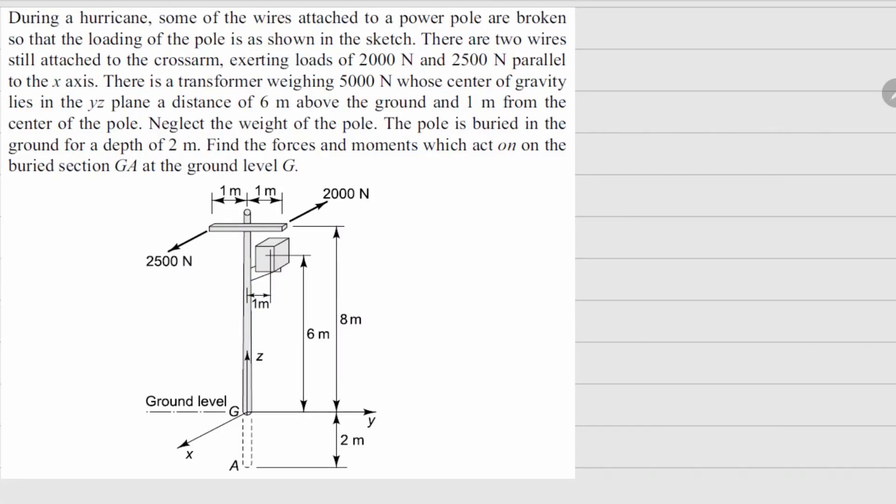This one is problem 1.18. It says during a hurricane some of the wires attached to a power pole are broken and only two wires are still attached and the loads are 2500 newton and 2000 newton here.